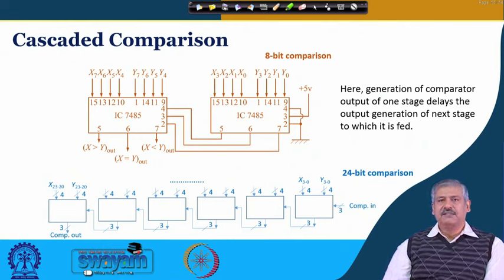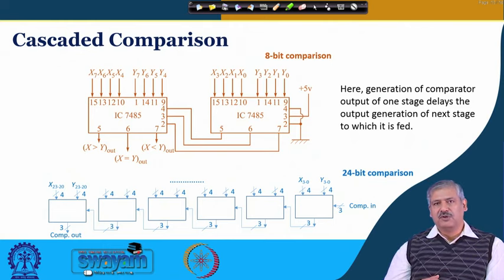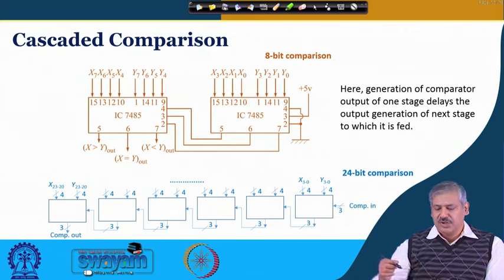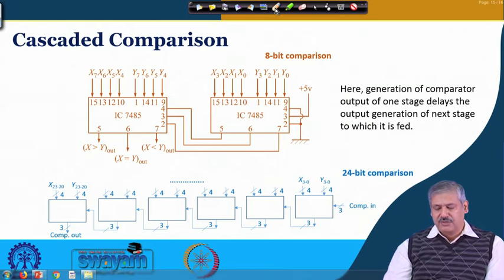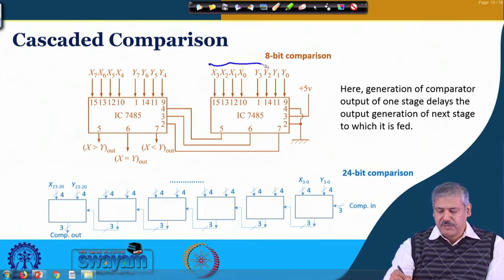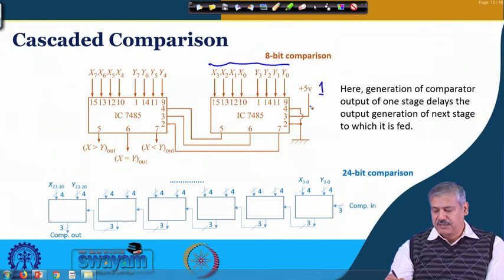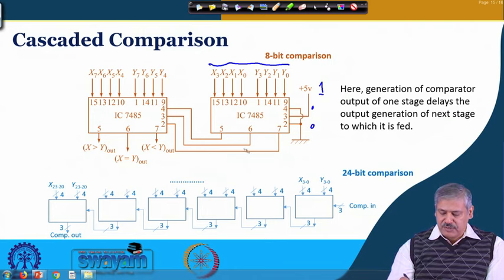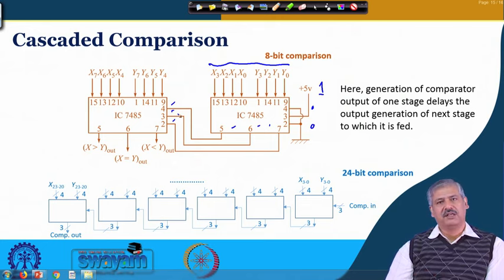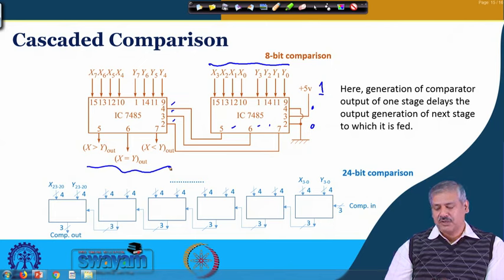IC 7485 can be used to compare more bits because of the cascade input option. For 8-bit comparison, lower significant bits are placed in one IC with the x-equal-to-y input kept high and others low. The outputs — x greater than y, equal to y, and x less than y — from that IC are passed as inputs to the next IC, and the final output is taken from there.